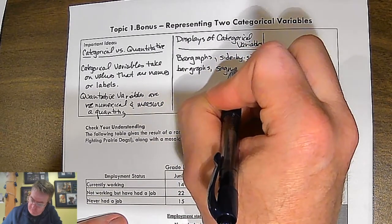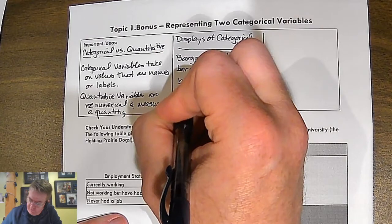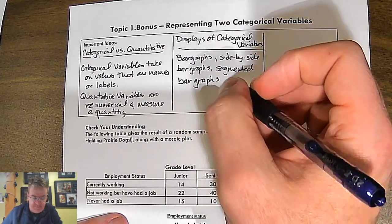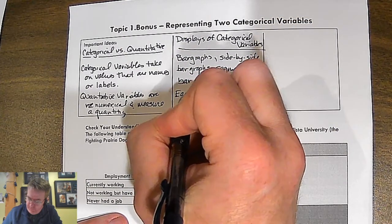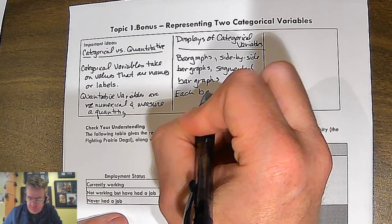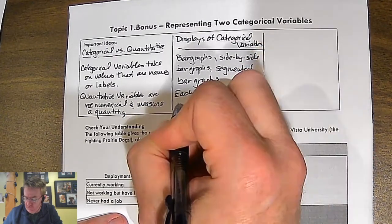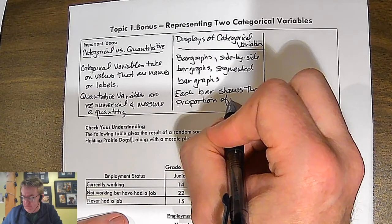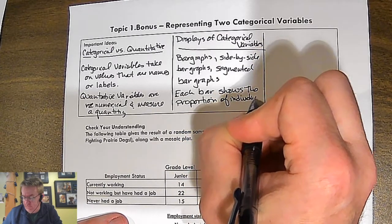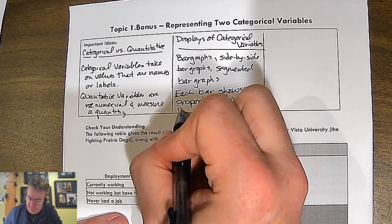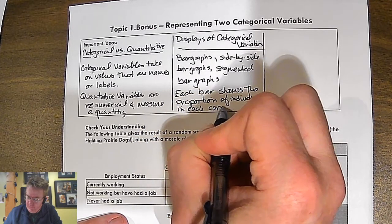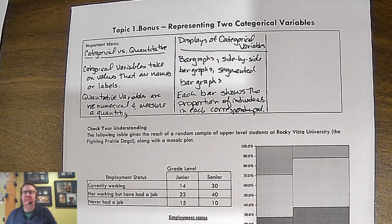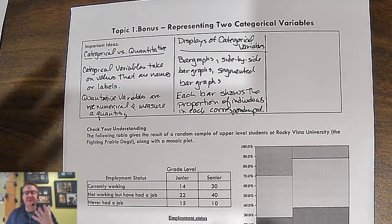Each bar shows the proportion of individuals in each corresponding category. Yay. Why wouldn't you be excited?